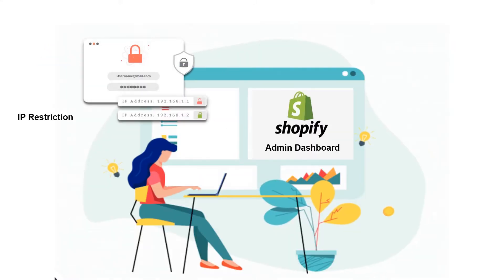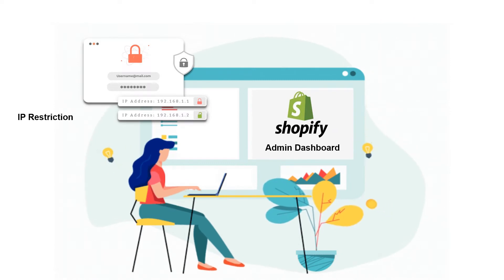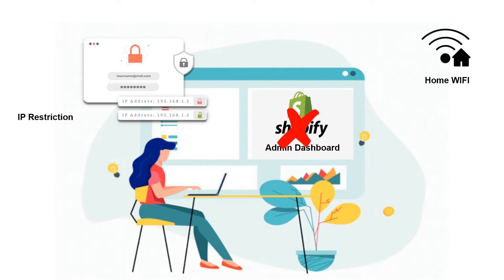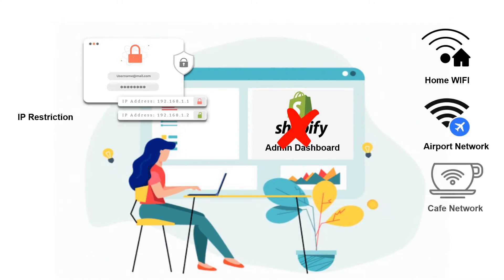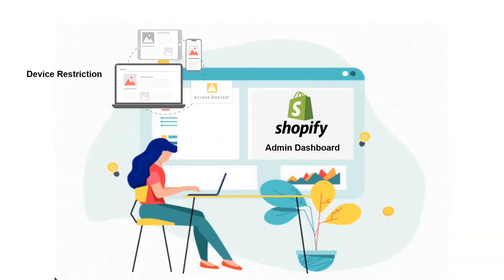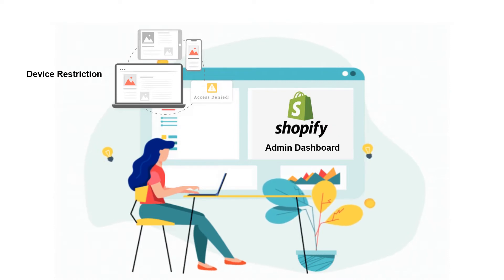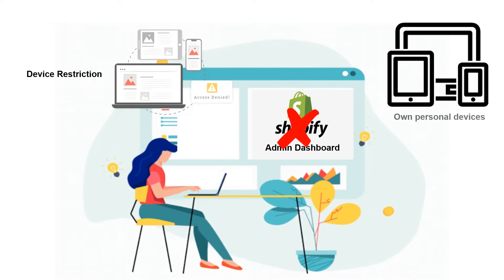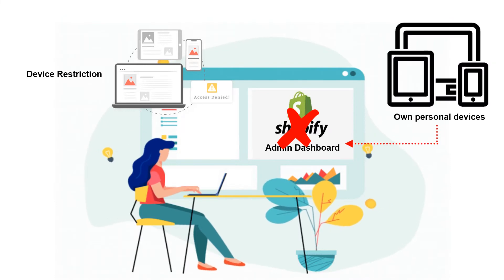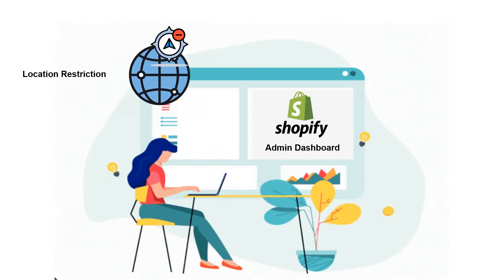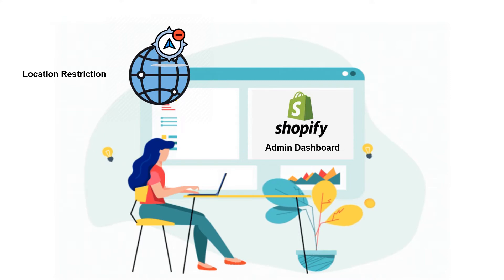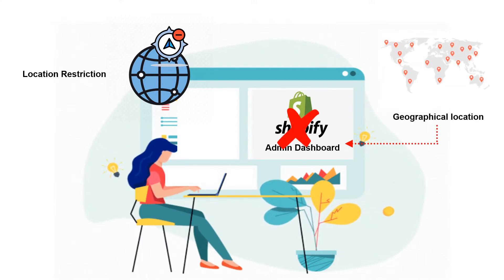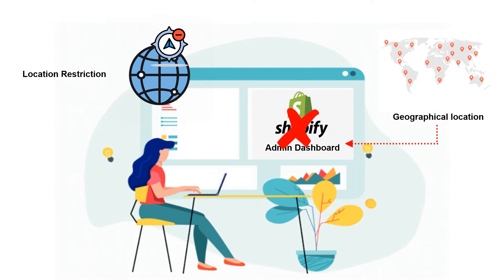With IP restriction enabled, the admin will not be able to access the Shopify Dashboard from a foreign network such as their home Wi-Fi, airport network, or a cafe network. With device restriction enabled, the admin will not be able to access the Shopify Dashboard from a device which is not authorized by the company, such as their own personal device. With user location restriction enabled, the admin will not be able to access the Shopify Dashboard from a geographical location globally which has been blocked from access by the company.